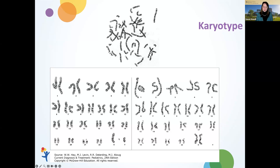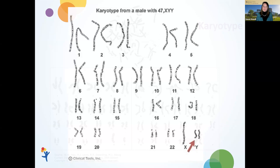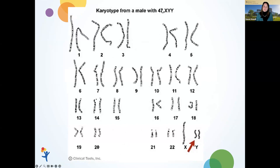When a Y chromosome is present, it carries the genes that drive male development. In the absence of the Y chromosome, females develop and typically have two X chromosomes. When a karyotype is diagnostic for XYY, we see two Y chromosomes present in the cell — so instead of the typical 46 chromosomes in 23 pairs, we see 47, with the extra chromosome being Y.